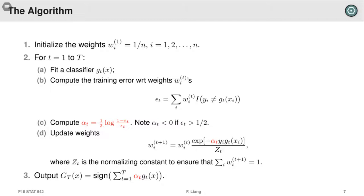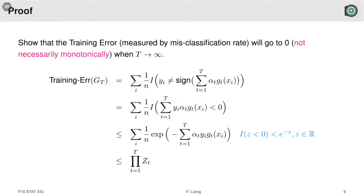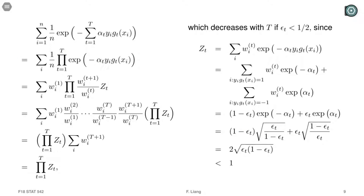Z_t is basically the normalizing constant — you sum over all i and divide by Z_t. There's a nice interpretation: when t gets larger, we can upper-bound the training error. The training error is how many observations get misclassified by the final classifier G, normalized by sample size. You can show the training error is upper-bounded by a product of the normalizing constants Z_t, and each Z_t is strictly less than 1 in most cases. That's why the upper bound keeps decreasing.